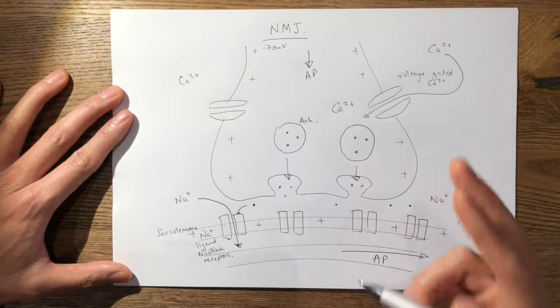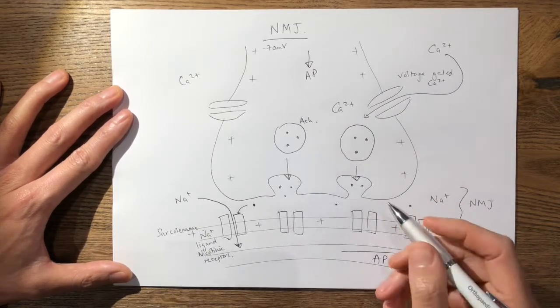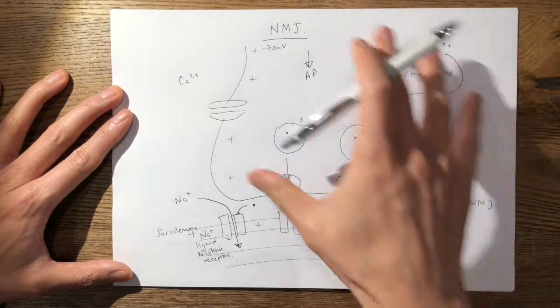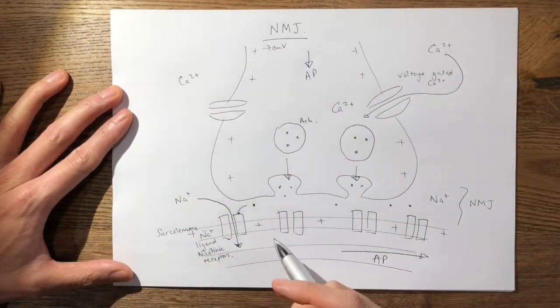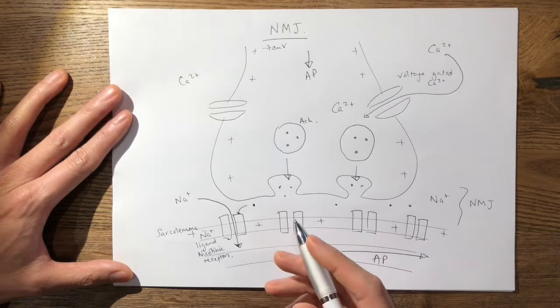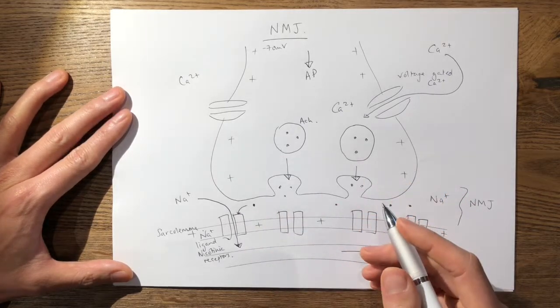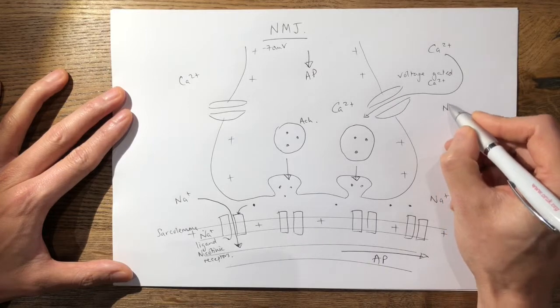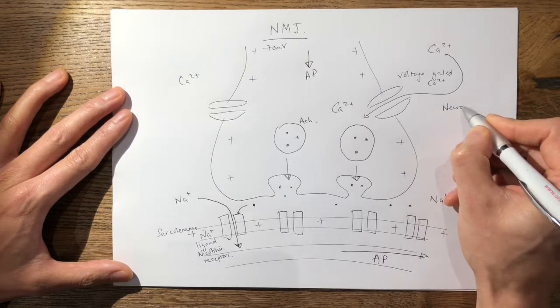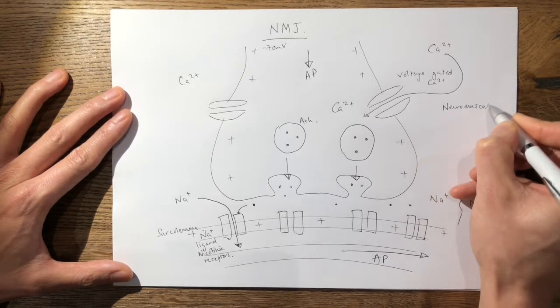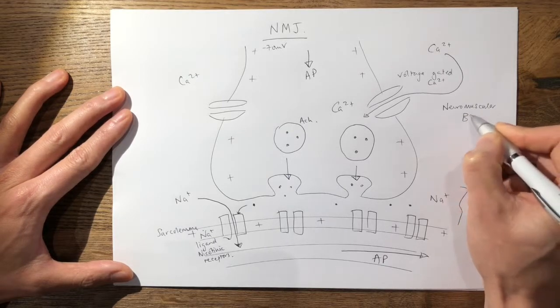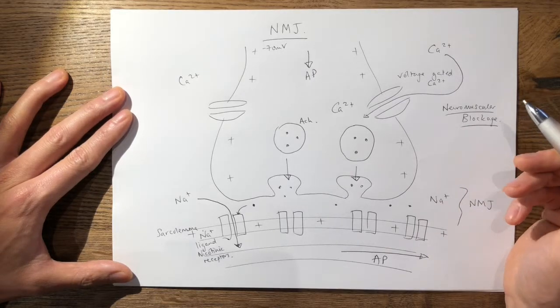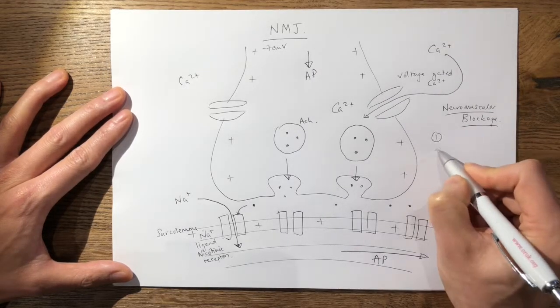There are a couple more things to mention and it's a favorite of examiners to ask what drugs actually occur at the neuromuscular junction and this is where it becomes more clinically relevant. First of all we talk about neuromuscular blockade. These are your muscle relaxants and largely speaking the anaesthetists use two types of muscle relaxants.